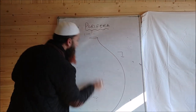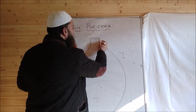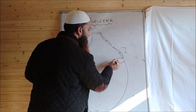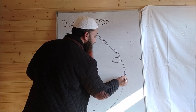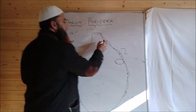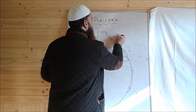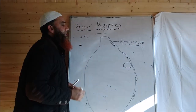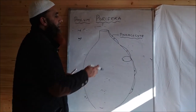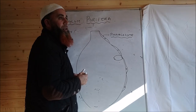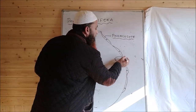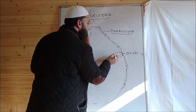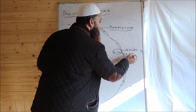If we draw the body wall of sponges, the outer layer contains flat cells known as pinacocytes which form the pinacoderm. There is also a pore called ostium present through a modified pinacocyte known as a porocyte. The osculum is also visible in this structure.